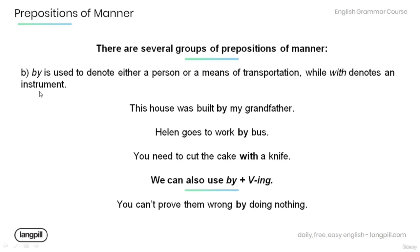Group B: 'by'. 'By' is used to denote either a person or a means of transportation, while 'with' denotes an instrument. For example: 'This house was built by my grandfather' — denoting a person. 'Helen goes to work by bus' — denoting a means of transportation. 'You need to cut the cake with a knife' — denoting an instrument. We can also use 'by' plus verb-ing, for example: 'You can't prove them wrong by doing nothing.'